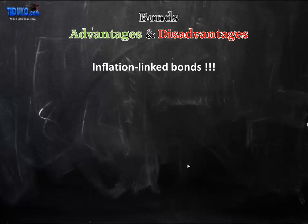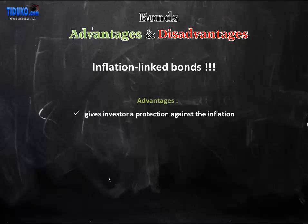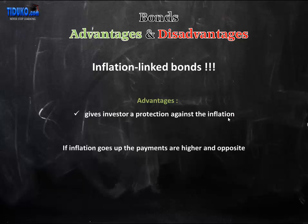The last one is the inflation-linked bond. The inflation-linked bond makes coupon payments in relation to inflation, and that is actually their advantage — it gives investors protection against inflation. How it works is that if inflation goes up, the payments are higher, and opposite if inflation falls.